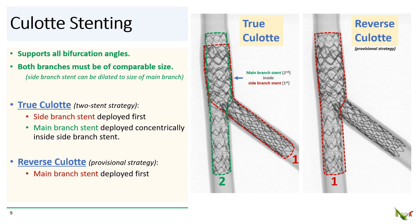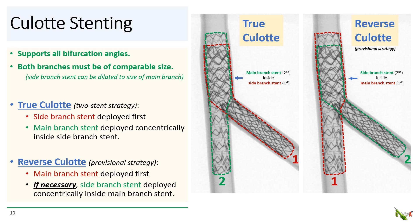The other variation is reverse culotte. Traditionally, reverse culotte is considered a provisional strategy where you intend to just stent the main branch and only stent the side branch if it becomes necessary. In this case, the first stent goes into the main branch. After nicely post-dilating the main branch, if necessary, the side branch stent is deployed, and its proximal part ends up concentrically inside the proximal part of the main branch stent. I tend to use reverse culotte even if I am planning from the beginning to do a two-stent strategy.